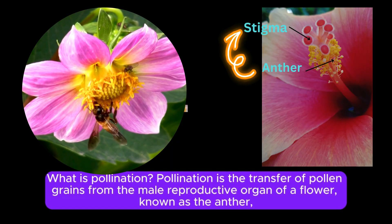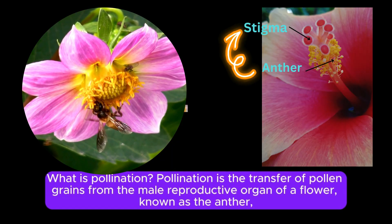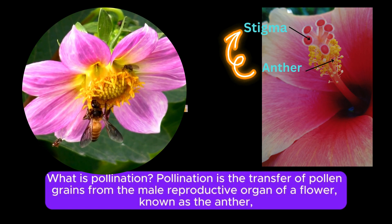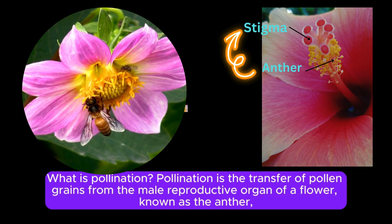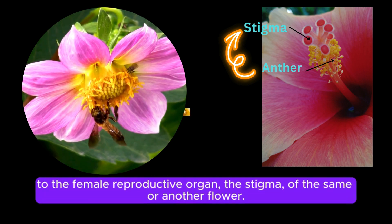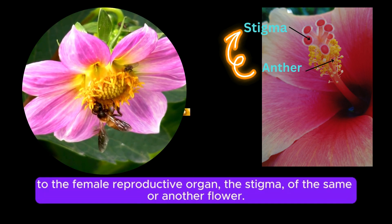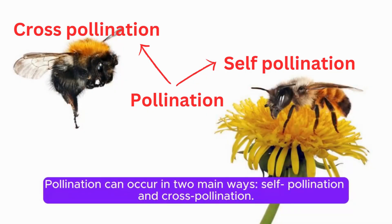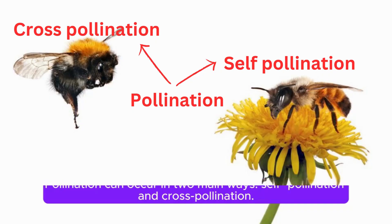Pollination is the transfer of pollen grains from the male reproductive organ of a flower, known as the anther, to the female reproductive organ, the stigma of the same or another flower. Pollination can occur in two main ways: self-pollination and cross-pollination.